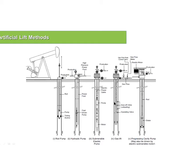Gas lift will be discussed in detail next. The PCP — progressive cavity pump — uses a rod and stator; the rod rotates and delivers energy to the fluid. The most famous artificial lift methods are the ESP, sucker rod, and gas lift. PCP is used mostly when we have highly viscous fluid or when depths are not very high.